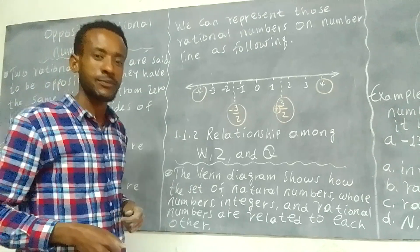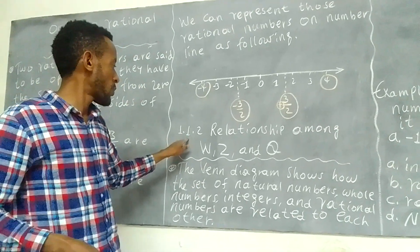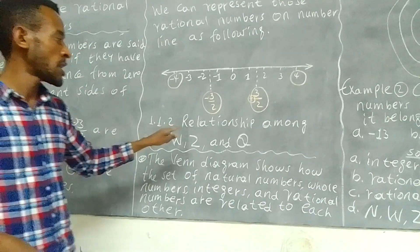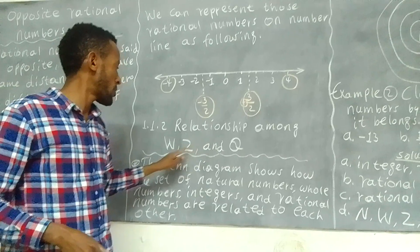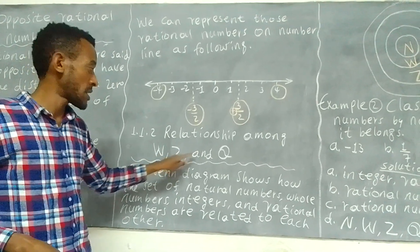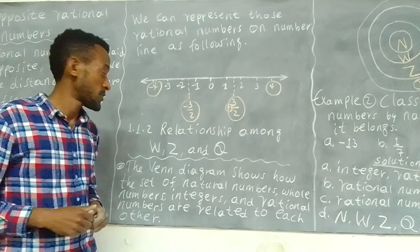1.1.2: Relationships among whole numbers, integers, and rational numbers.